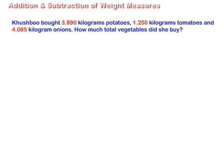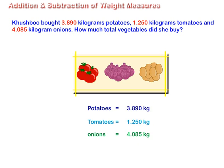Let us solve a word problem. Khushbu bought 3.890 kilograms of potatoes, 1.250 kilograms of tomatoes, and 4.085 kilograms of onions. How many total vegetables did she buy? The weight of potatoes is 3.890 kilograms, tomatoes is 1.250 kilograms, and onions is 4.085 kilograms. Now add the numbers like decimals to find the total weight.